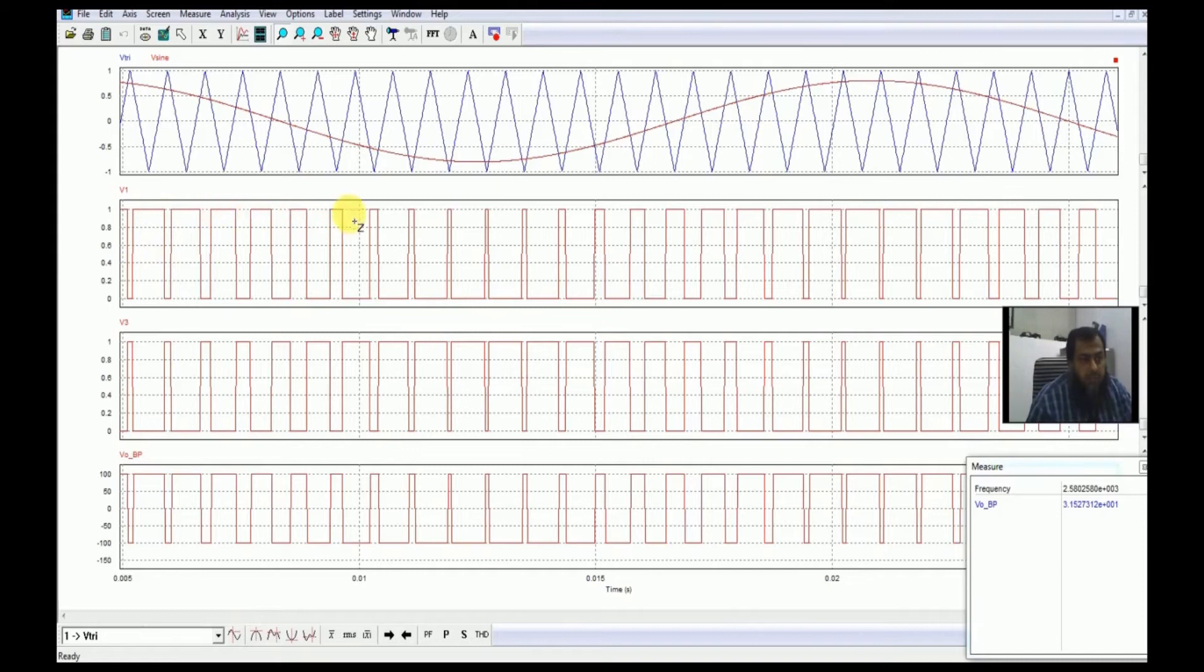You can see here that the width of these pulses is varying sinusoidally such that we have the most wider width pulse here and the thinnest pulse at this particular point. This is how we have actually simulated and developed the bipolar PWM inverter.